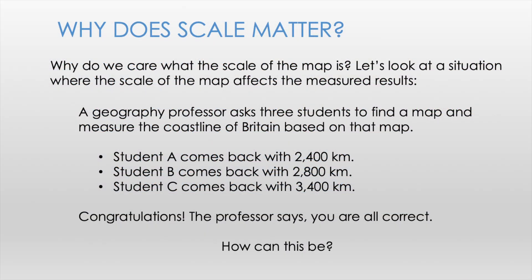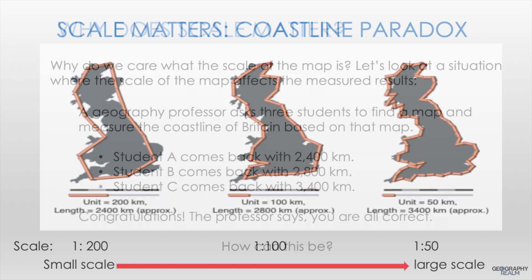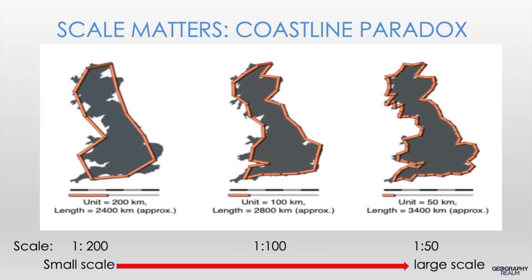So why is scale important? Here's one hypothetical. A geography professor asked three students to find geographic data and measure the coastline of Britain. Student A comes back with 2,400 kilometers, student B comes back with 2,800 kilometers, and student C comes back with 3,400 kilometers. Which student got it right? Well, actually, the professor says all the students are correct. So how can this be? This problem is known as the coastline paradox.